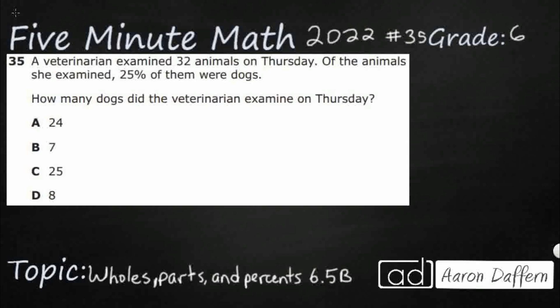So we have a veterinarian examining 32 animals, and of the animals she examined, 25% of them were dogs. So how many dogs? We need to take 25% of 32.